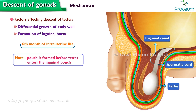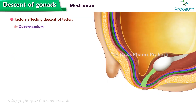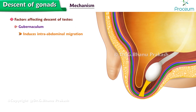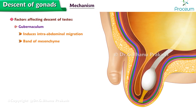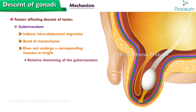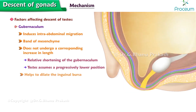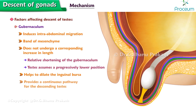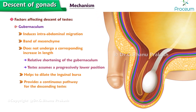Another factor that affects the descent of the testes is the gubernaculum, which induces intra-abdominal migration. This is a band of mesenchyme which extends from the lower pole of the testes to the scrotum. When the embryo increases in size, the gubernaculum does not undergo a corresponding increase in length. Thus, there is a relative shortening of the gubernaculum and as a result, the testes assume a progressively lower position. The gubernaculum helps to dilate the inguinal bursa, which provides a continuous pathway for the descending testes.